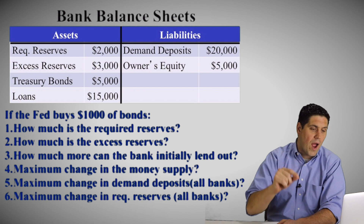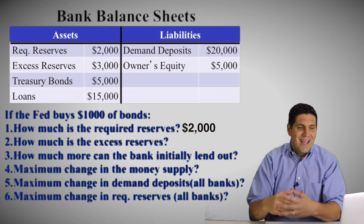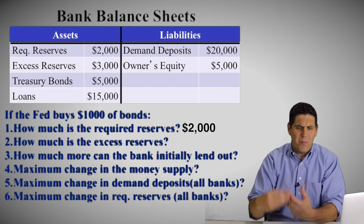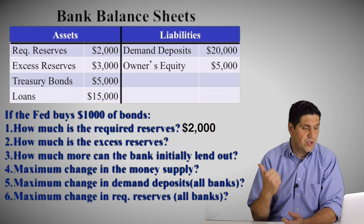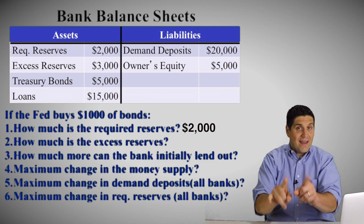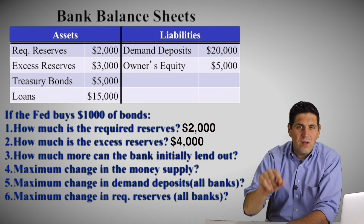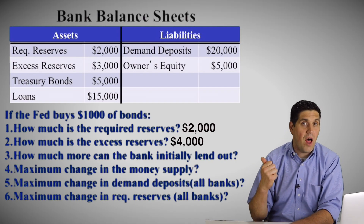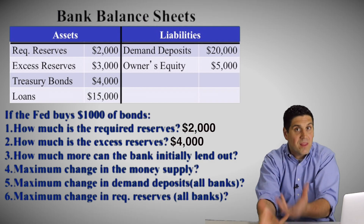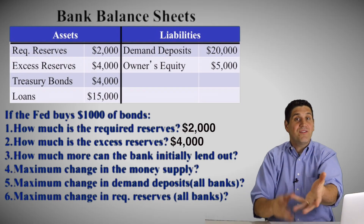For the first one, what is the required reserves? We know the ratio is 0.1 or 10%, but how much is the required reserves? The required reserves don't change — they're still $2,000. Why? Because demand deposits didn't change. No one deposited money in this bank. The Fed didn't deposit money in the bank — the Fed just bought those treasury bonds, $1,000 of those treasury bonds back. So the reserve requirement still stays 10% and the required reserves still stay $2,000. What about excess reserves? That does change. Before it was $3,000, but now the bank has $4,000 of excess reserves that it can loan out. When the Fed bought treasury bonds, the treasury bonds went from $5,000 down to $4,000 on the asset side. The Fed put money into the banking system — it doesn't go to loans or required reserves; it ends up in excess reserves. That is money the bank is free to loan out.